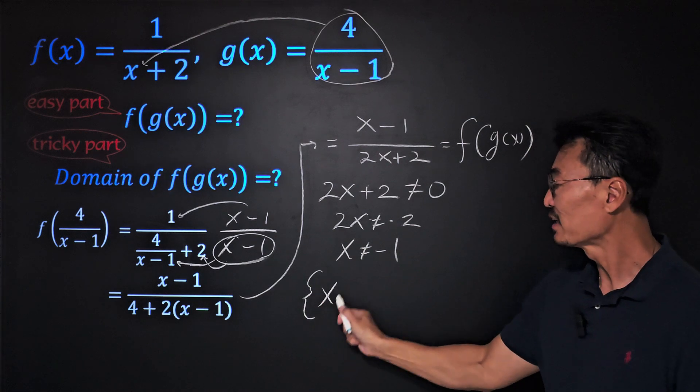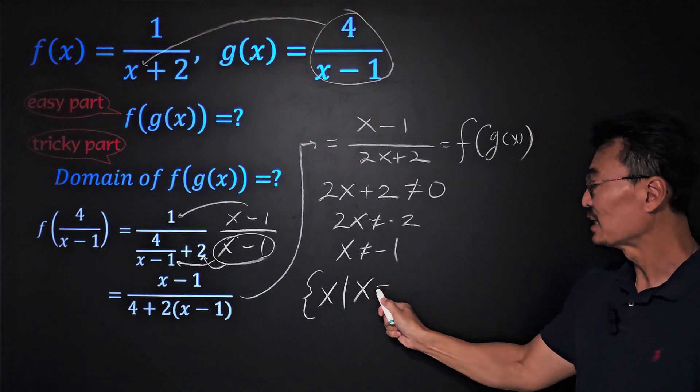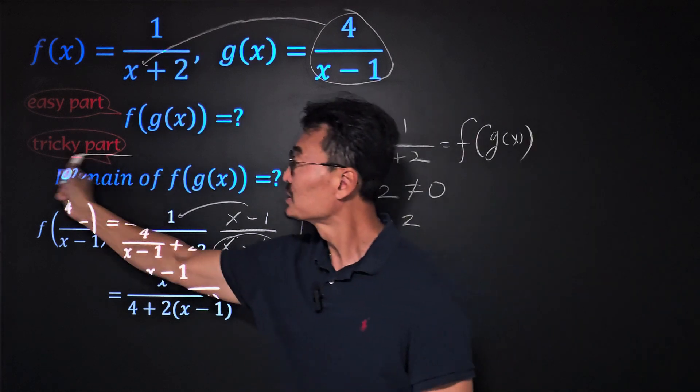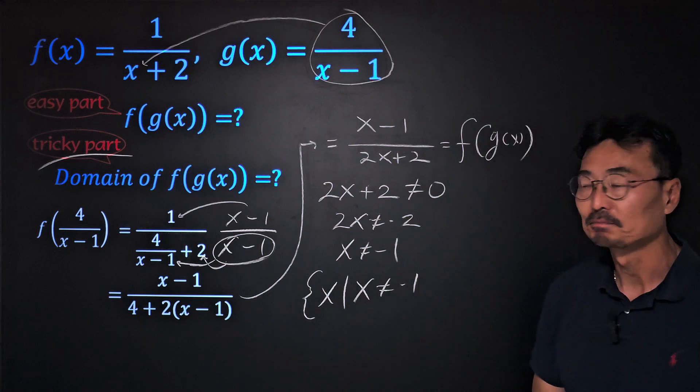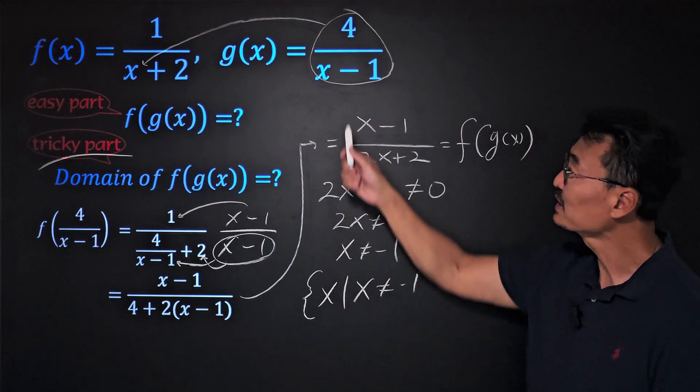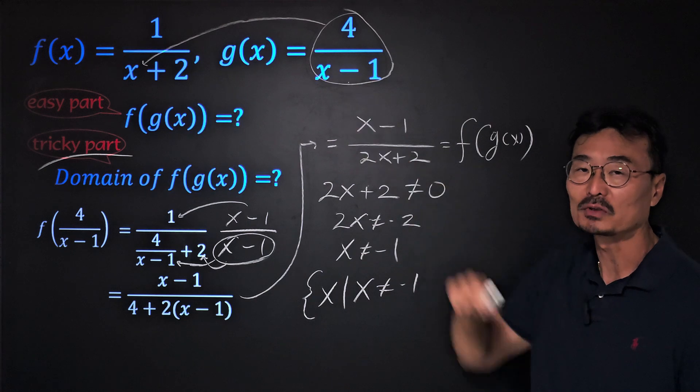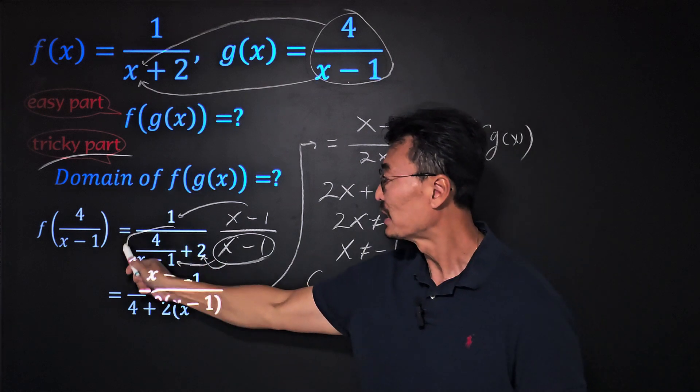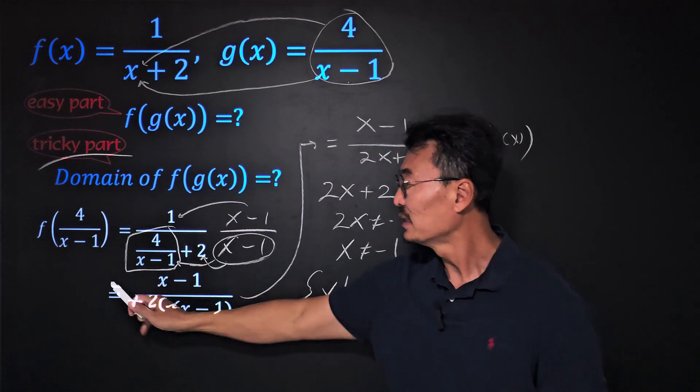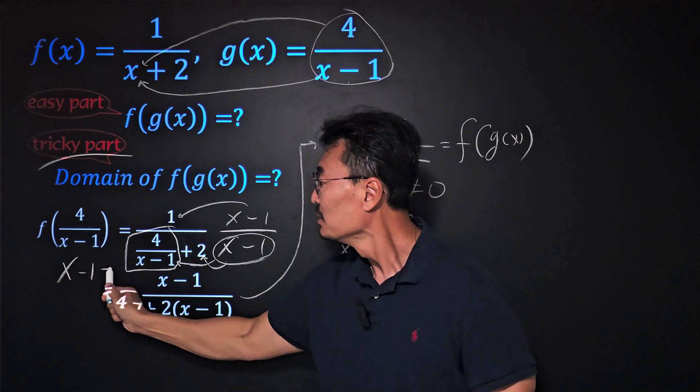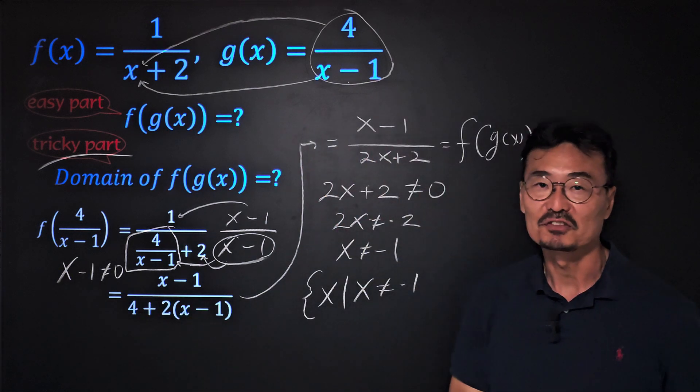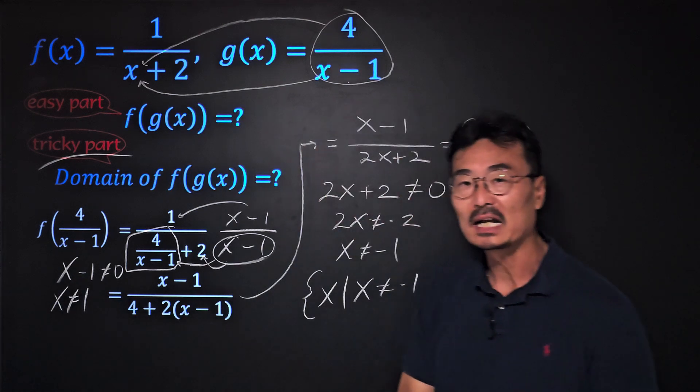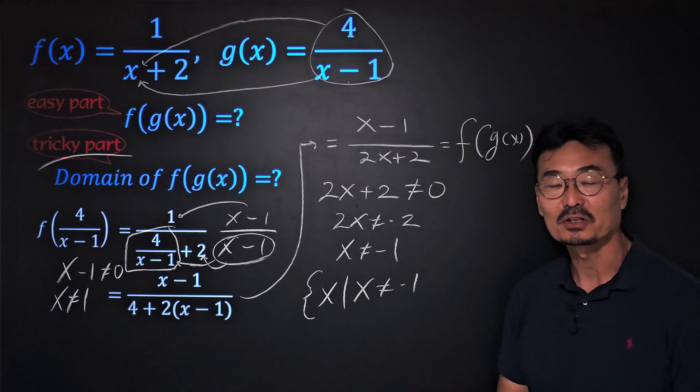So that's going to be our domain where x cannot be -1. There's a reason I put the words 'tricky part' right there. When we took that g(x) or 4/(x-1) into the x of the f(x) function, notice that x-1 cannot be 0, or x cannot be 1, and that has to be part of our domain as well.